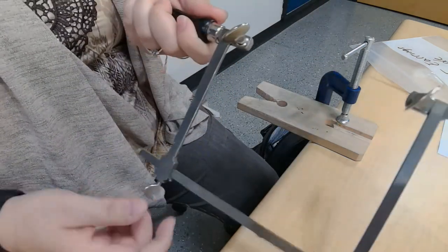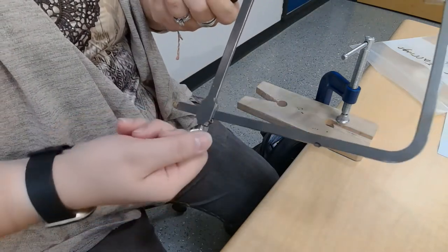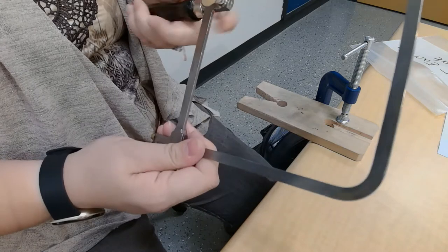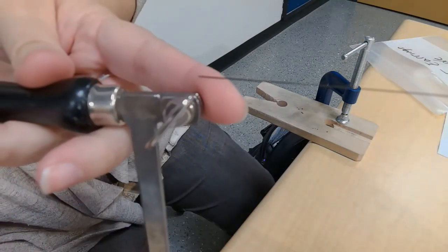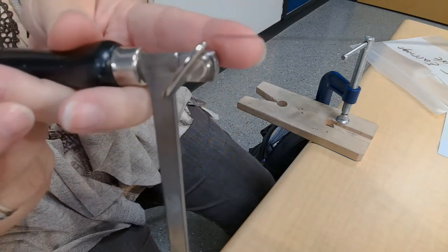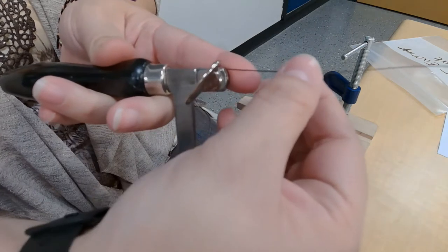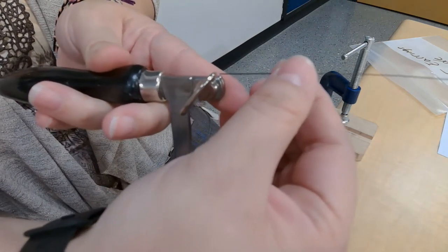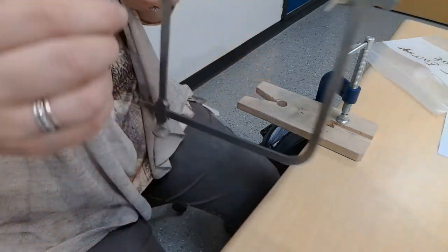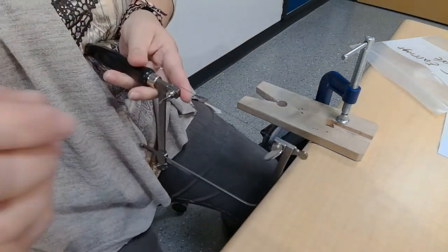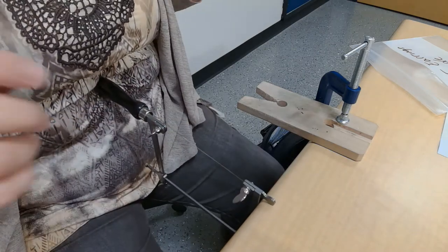So my blade is in here and it's just flopping around. I need to now adjust the height of my saw. So I do that with this thing here. I unscrew it and I'm going to just make it that my saw blade is going to just barely fit in there. Can you see how it doesn't really fit? There's not enough space.